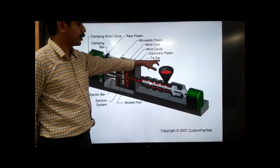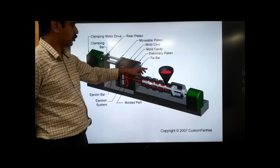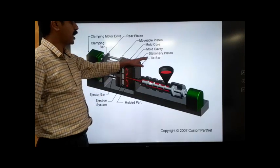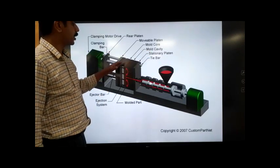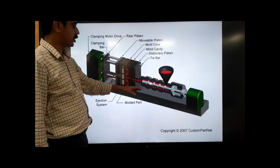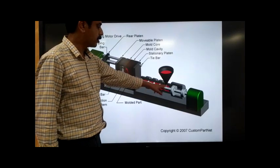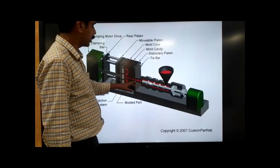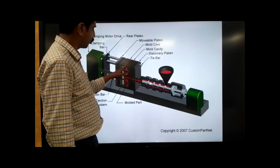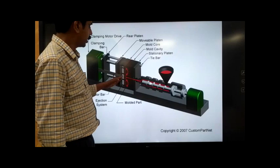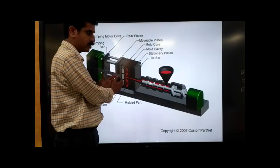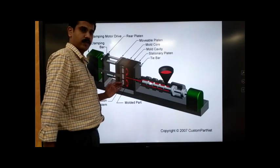Here in this cross-sectional figurative representation, we can see the tie bar, whose function is to control the movement of the mold. We also have the stationary platen, mold cavity, mold core, and mold platen. The material is shown in red color and is allowed to move into the mold. Inside the mold, when the mold is in the closed condition and the material is being injected, the product is being formed.